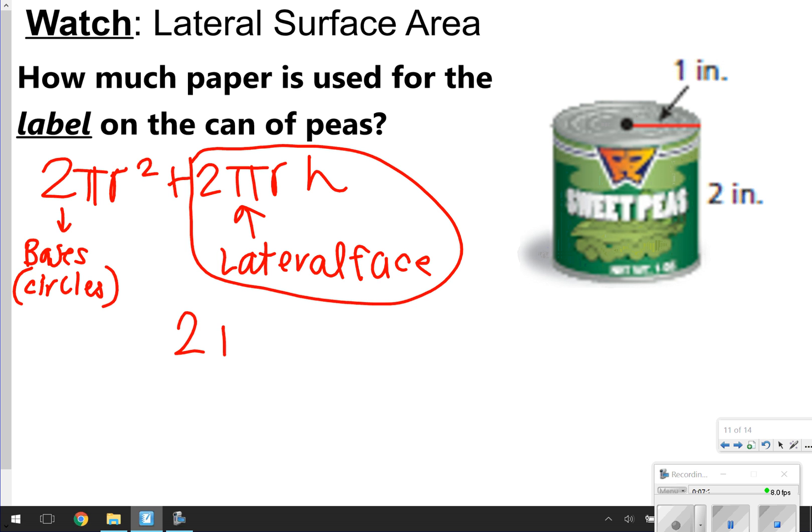2πrh would be 2 times π times 1, which is the radius, times 2, which is the height. Again, just multiplying the numbers first. 2 times 1 is 2, times 2 is 4. So that is 4π. We're going to put the answer in terms of pi, or not, sorry, not in terms of pi, but actually worked out. So I'm going to be doing 4 times π, which is 3.14. And that's going to give us 12.56 inches squared.